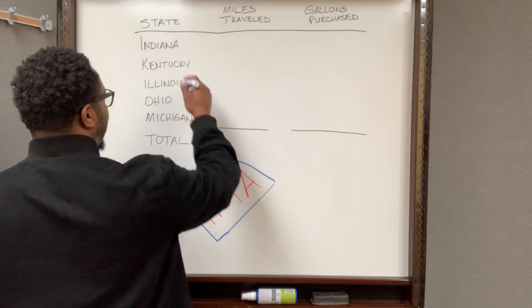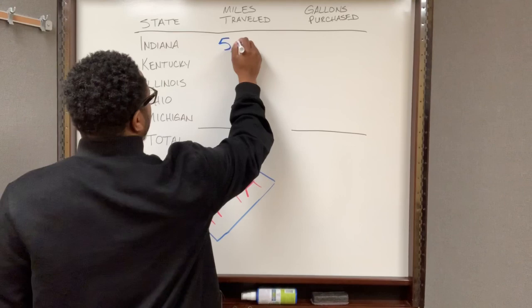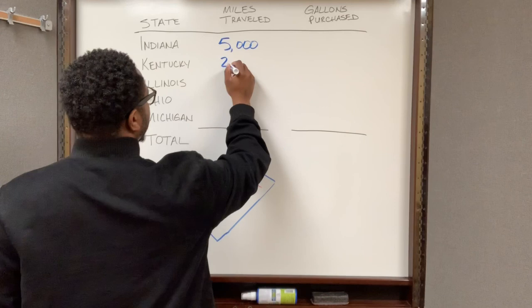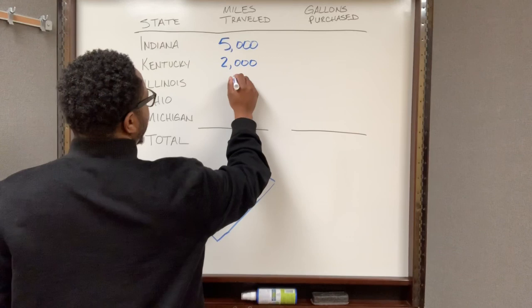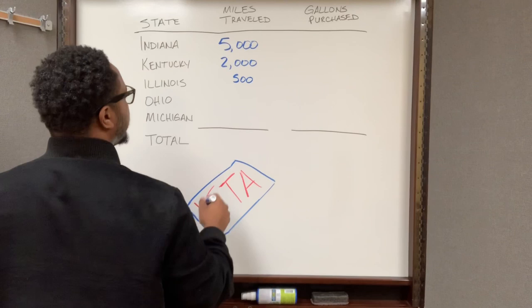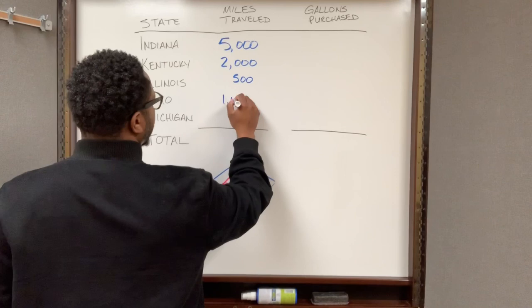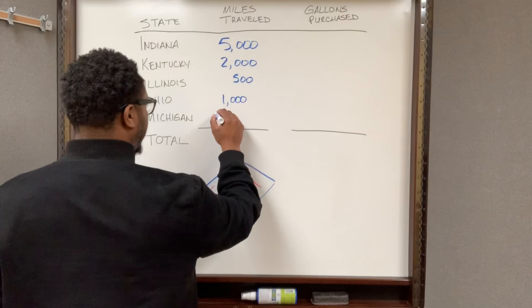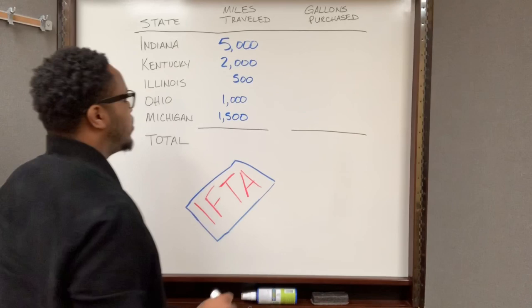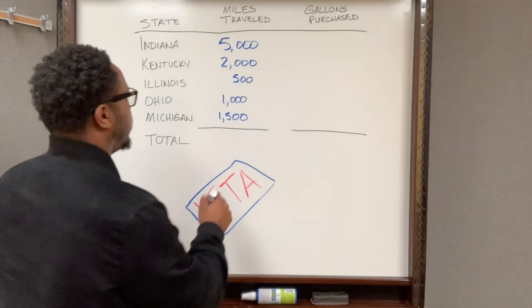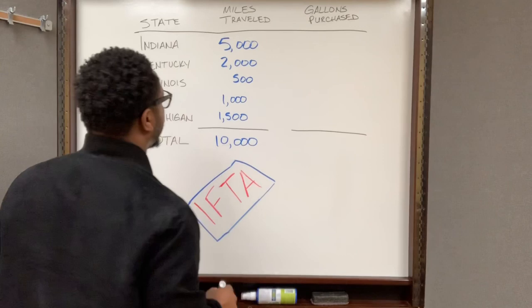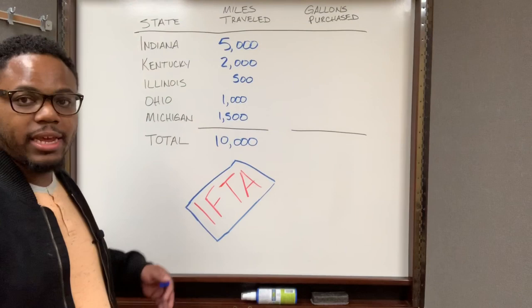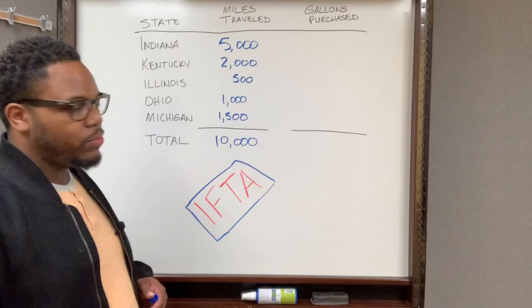For example, let's say in Indiana I traveled 5,000 miles this quarter, Kentucky 2,000, Illinois 500, Ohio 1,000, and Michigan 1,500. So the total miles traveled this quarter were 10,000 miles. I was able to get this information from my electronic log reports.